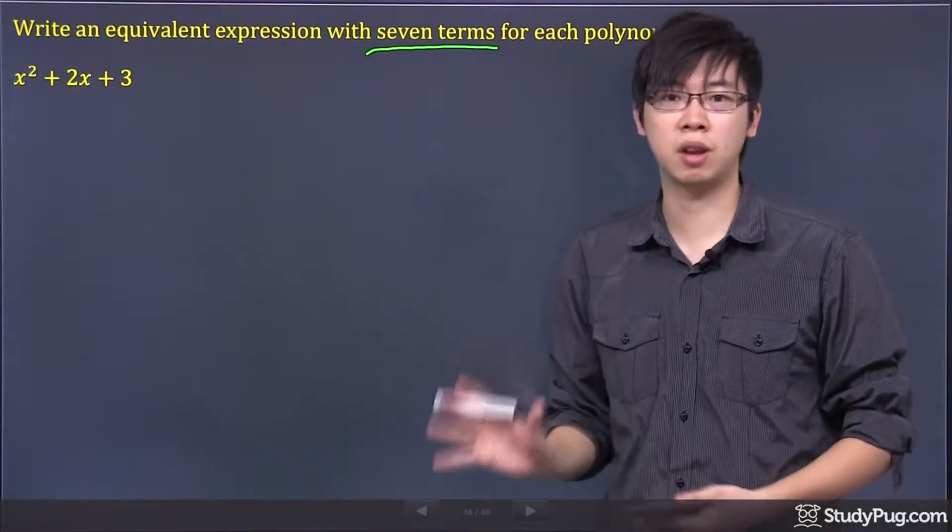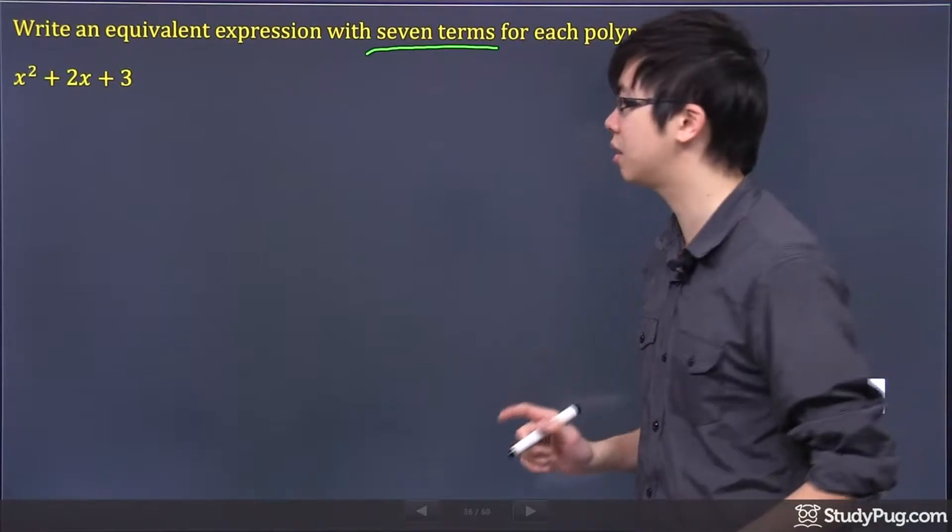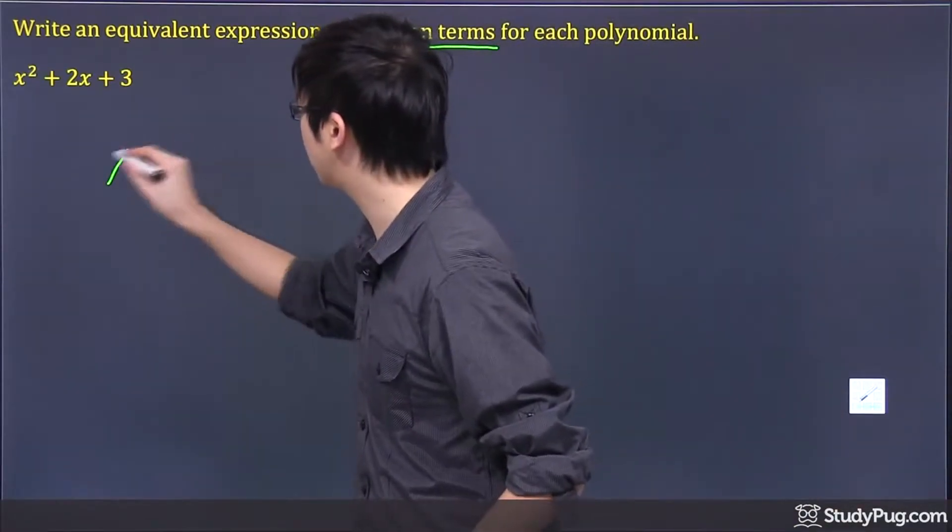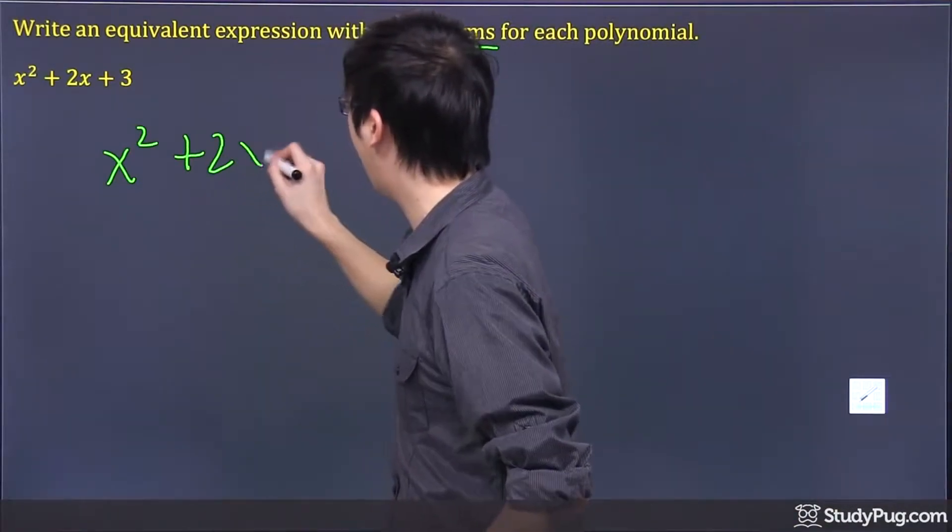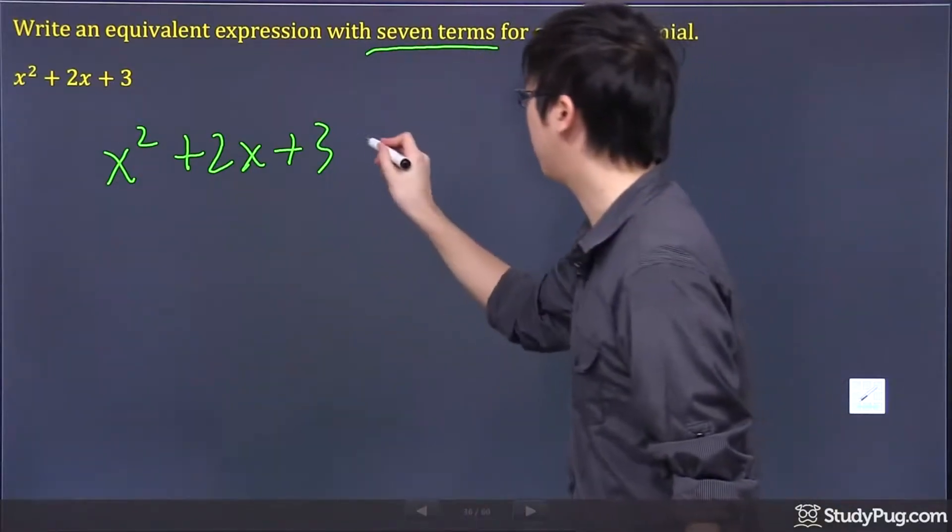It's your choice to come up with different answers. But the idea is the same. You need to get x squared plus 2x plus 3 as your final answer.